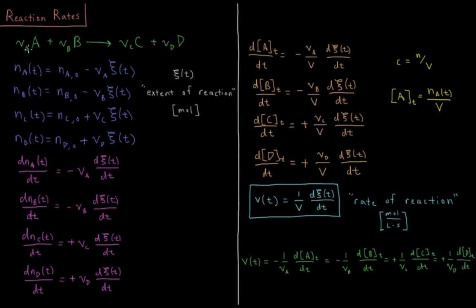If we take our concept from equilibrium called the extent of reaction, where we have the Greek letter xi representing the extent of reaction in moles, then we can now look at the reaction rate using the extent of reaction as a function of time, xi of t.